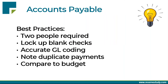For accounts payable, two people should be required to approve bills. This is similar to what most states require for reserve accounts, which require authorization by two people. For associations with a property manager, the manager approves and then it goes to a board member — typically the treasurer. For self-managed associations, two board members — typically the treasurer and the president — approve before payment. Sometimes the second approval is only required for items over five hundred or one thousand dollars.